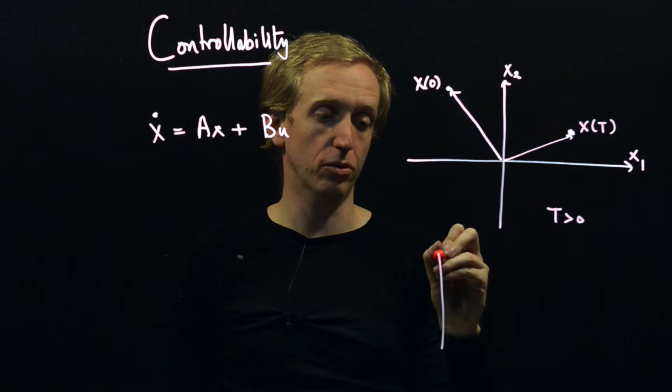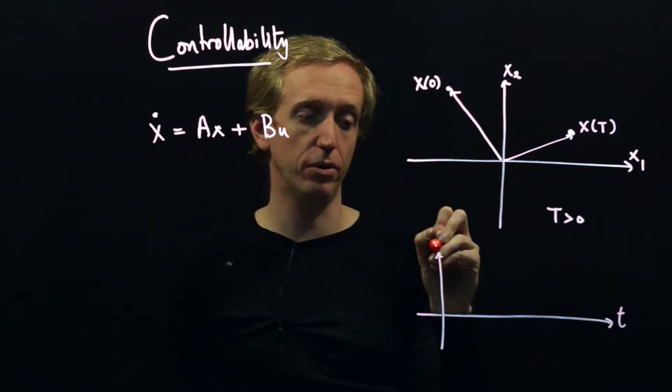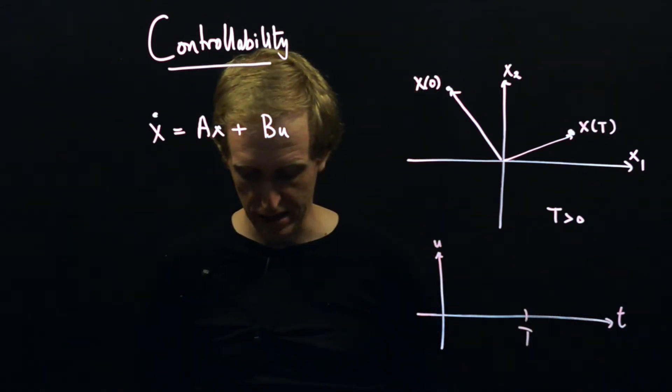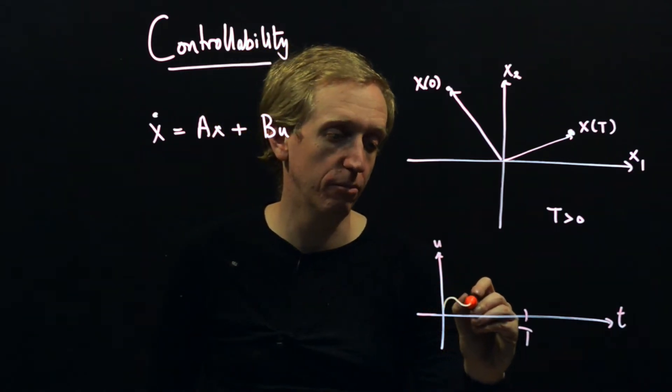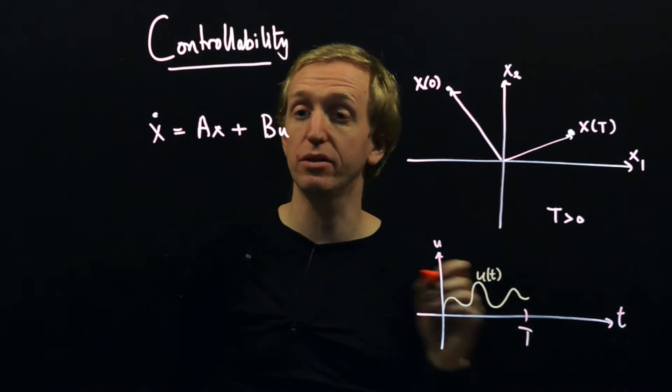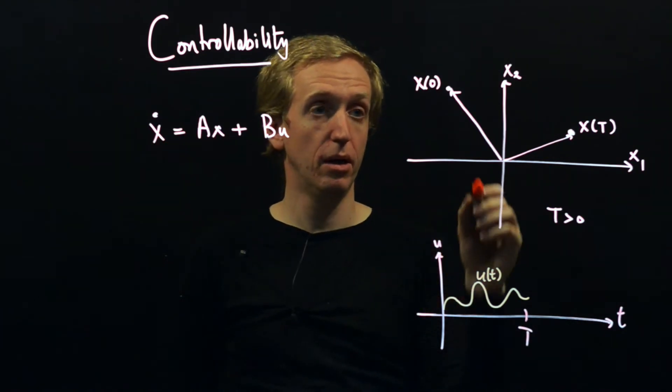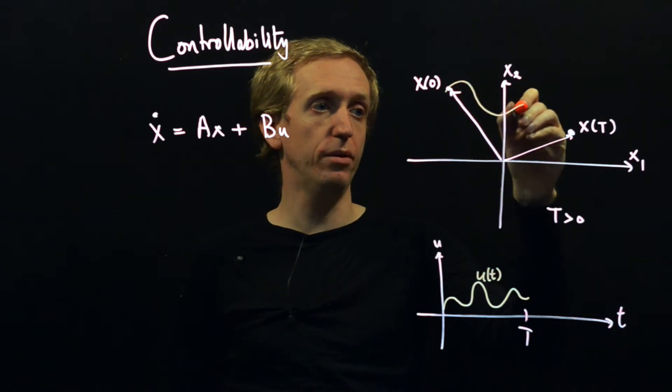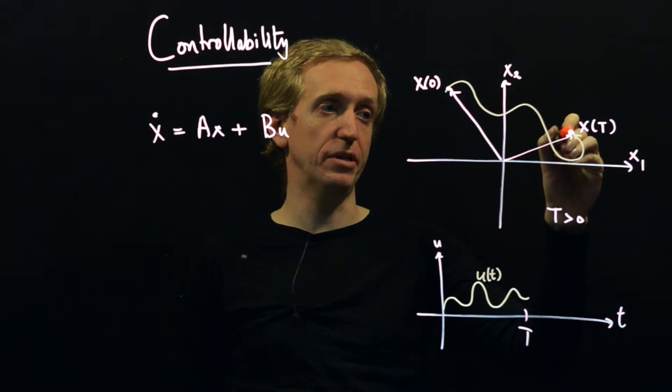So if we draw a second set of axes with time and U, we're asking can we come up with some function, maybe it looks something like that, for U of t. So that if I put U of t into my system here, as time passes, I'm here at the beginning and I'll just wander through my state space somehow and end up at this point here.